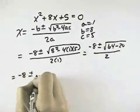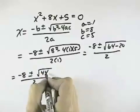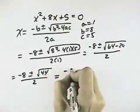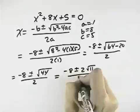So that gives me negative 8 plus or minus the square root of 44 all over 2. But I can take a 2 out of 44. That's 4 times 11. So this is negative 8 plus or minus 2 root 11 all over 2.